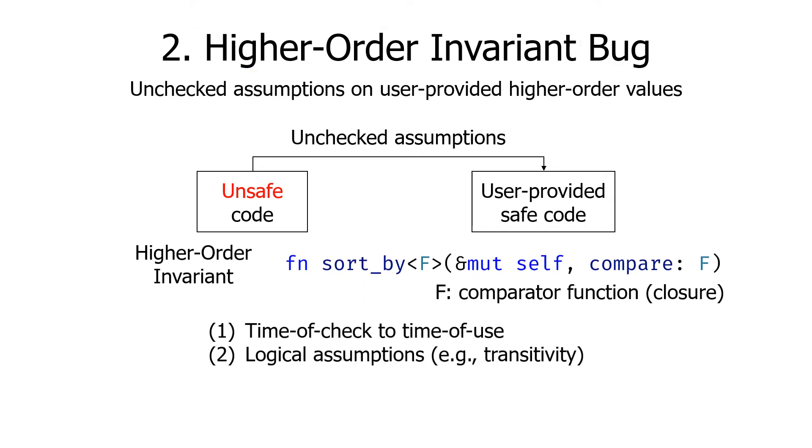Higher-order invariant bugs are difficult because the assumptions internal unsafe code makes on user-provided logic are implicit. The common examples of such assumptions are assuming that the function call always returns the same value, leading to time-of-check to time-of-use bugs, or unverified semantic assumptions, such as assuming that the comparator function satisfies transitivity or associativity. Rudra found a higher-order invariant bug in string join function in the standard library.